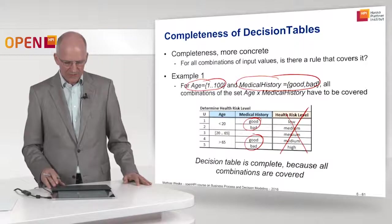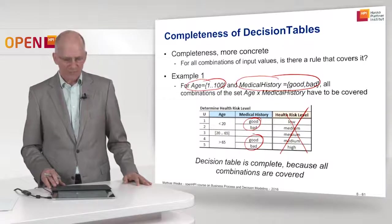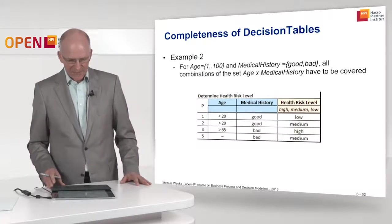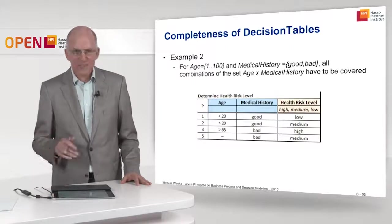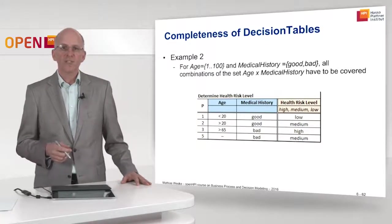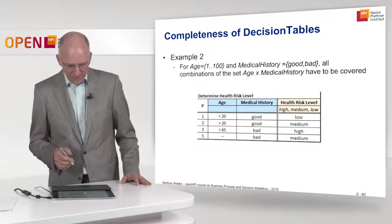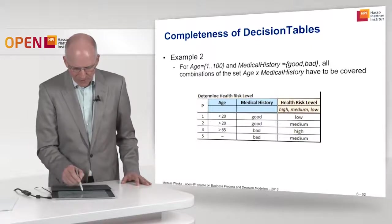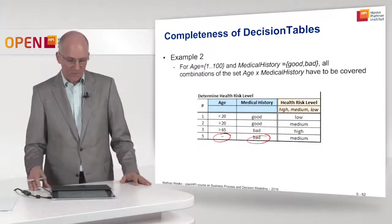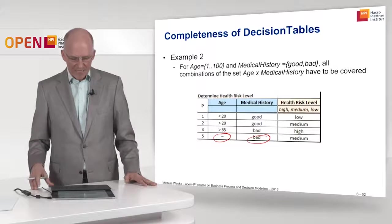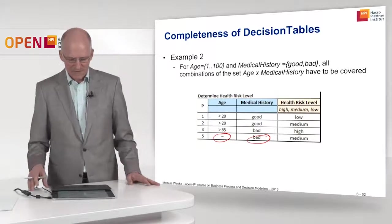We can conclude that the decision is complete because all combinations are actually covered. In the second example, we have the same scenario but a slightly different decision table. We also need to make sure that all combinations of the Cartesian product age times medical history are covered. Starting with rule 5: regardless of the age, for input with medical history equals bad, all ages are covered. So for the bad part, we are on the correct side.